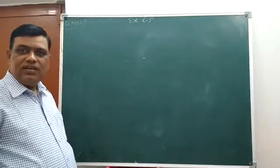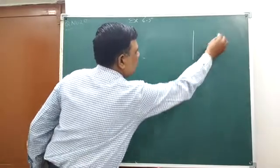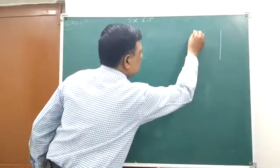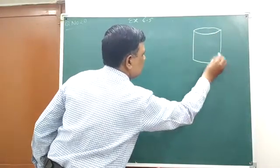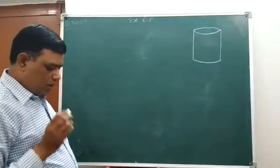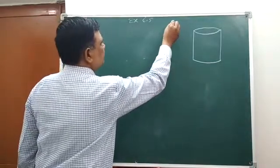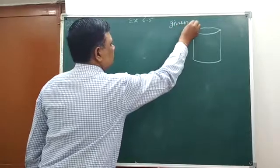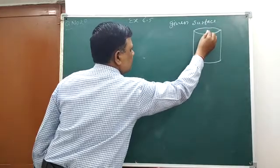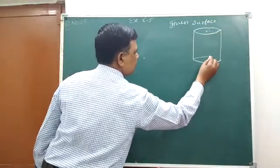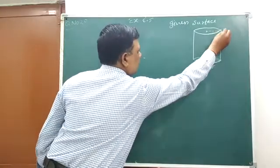And this question says show that the right circular cylinder of given surface, given surface means S, and radius r means H.